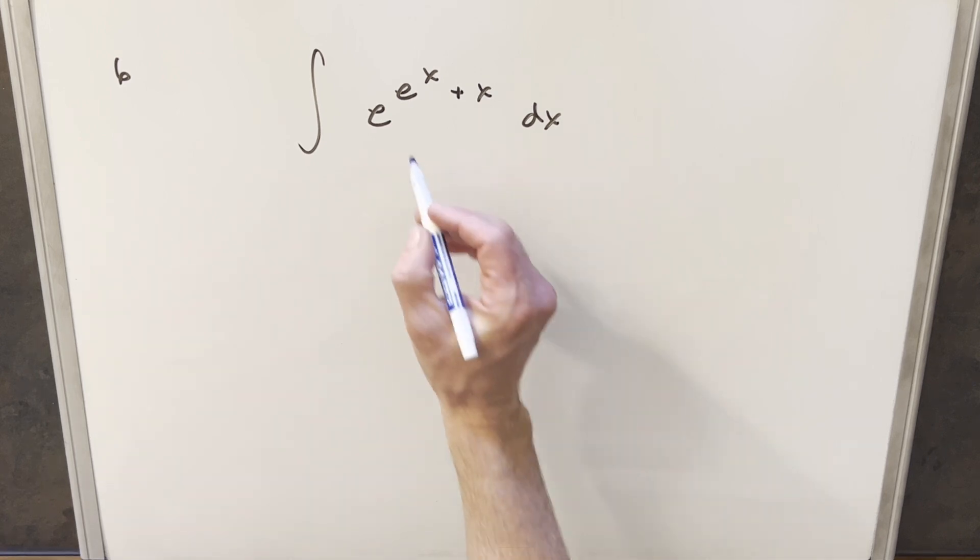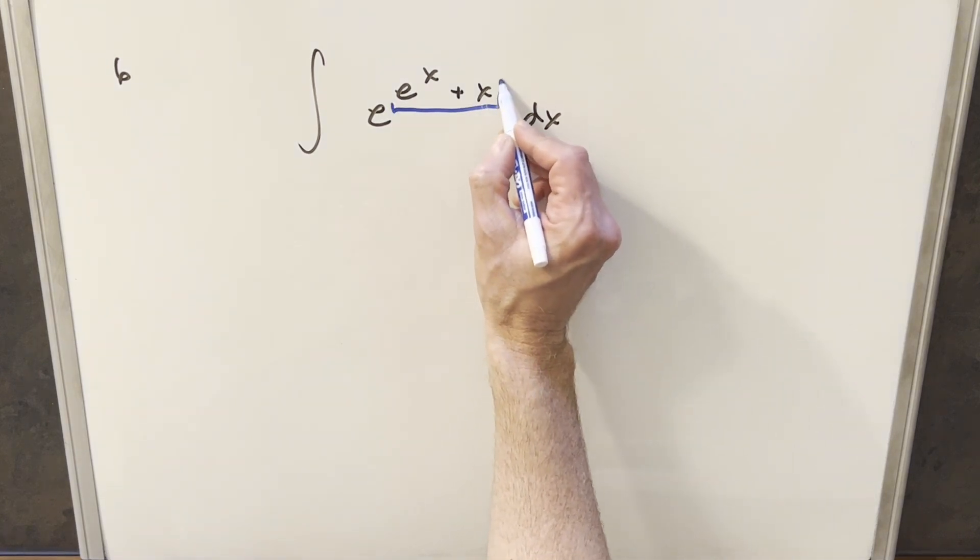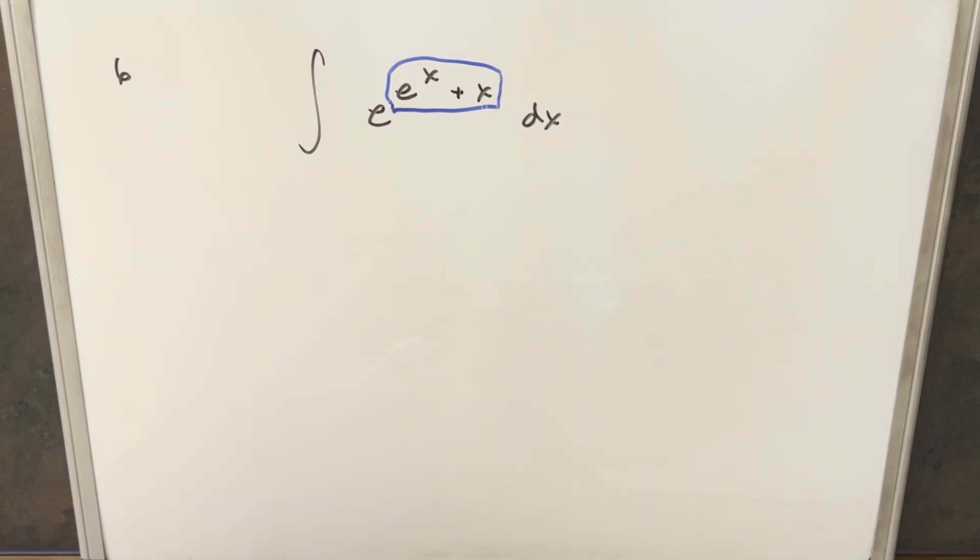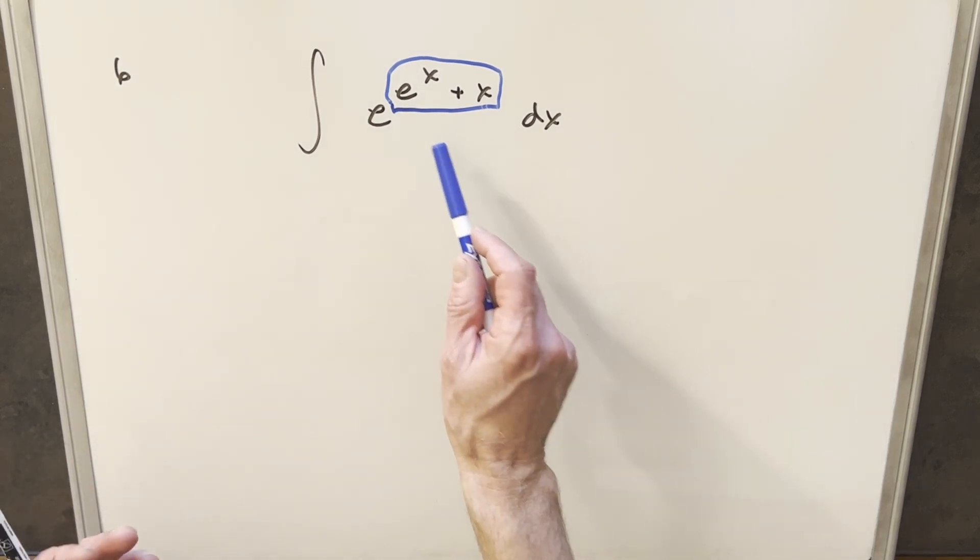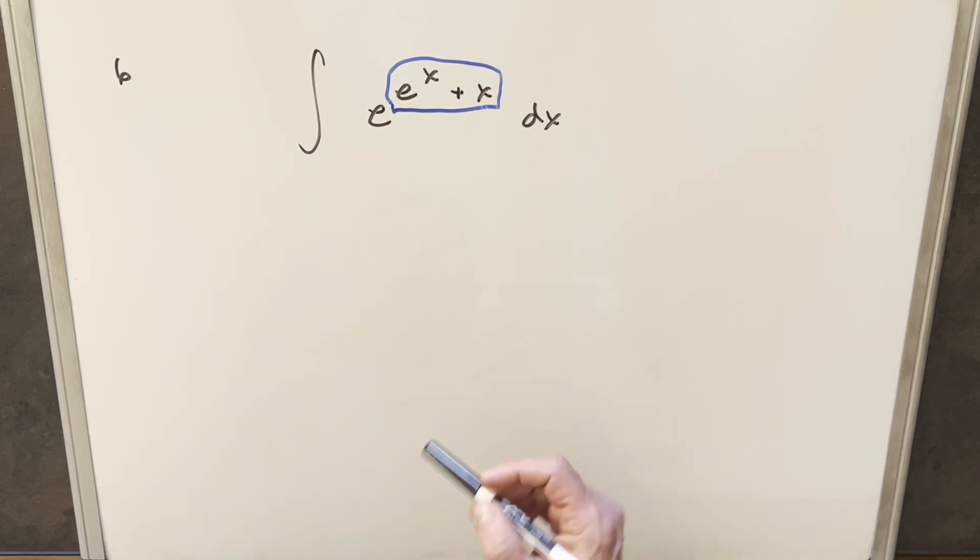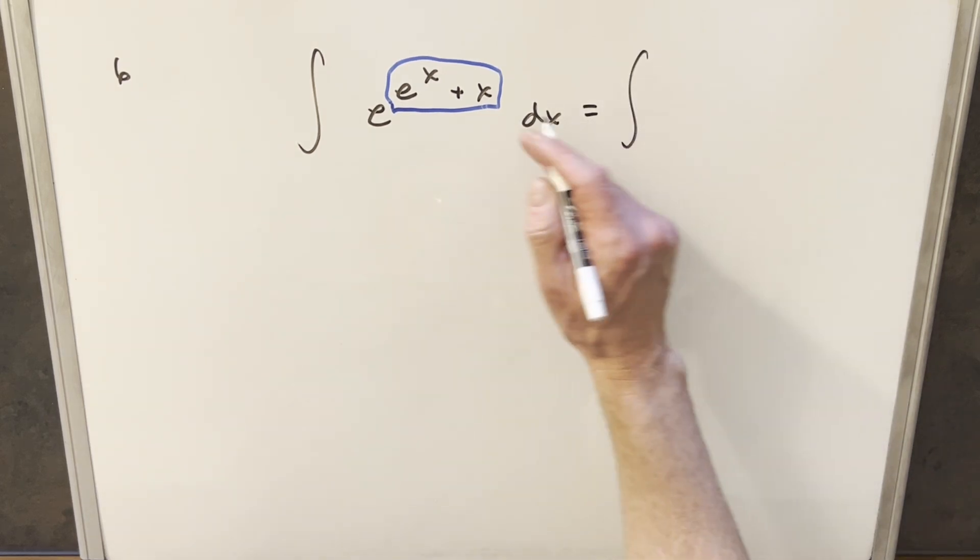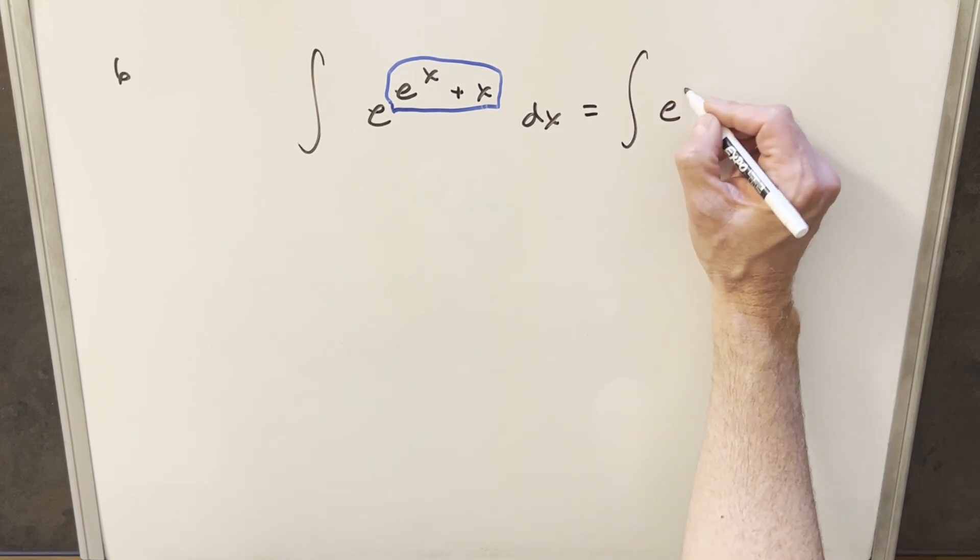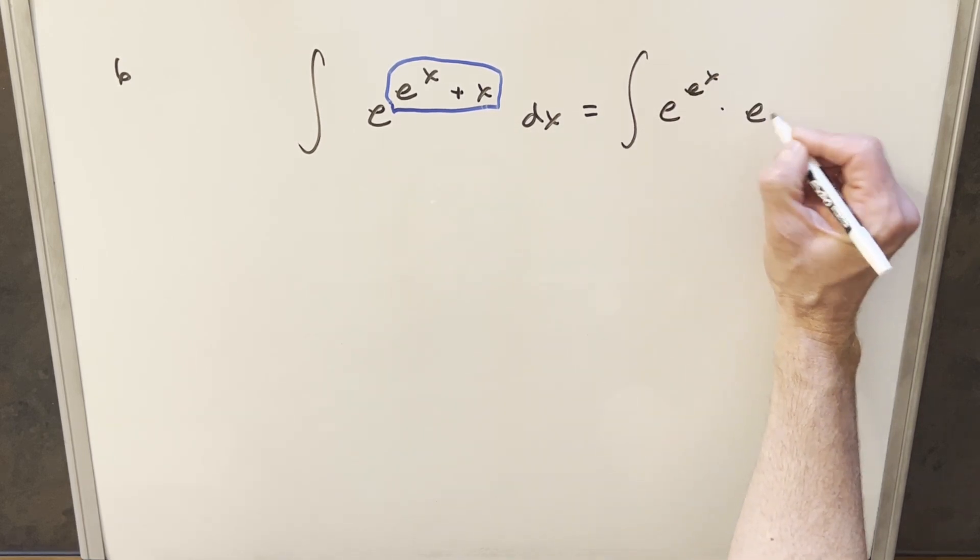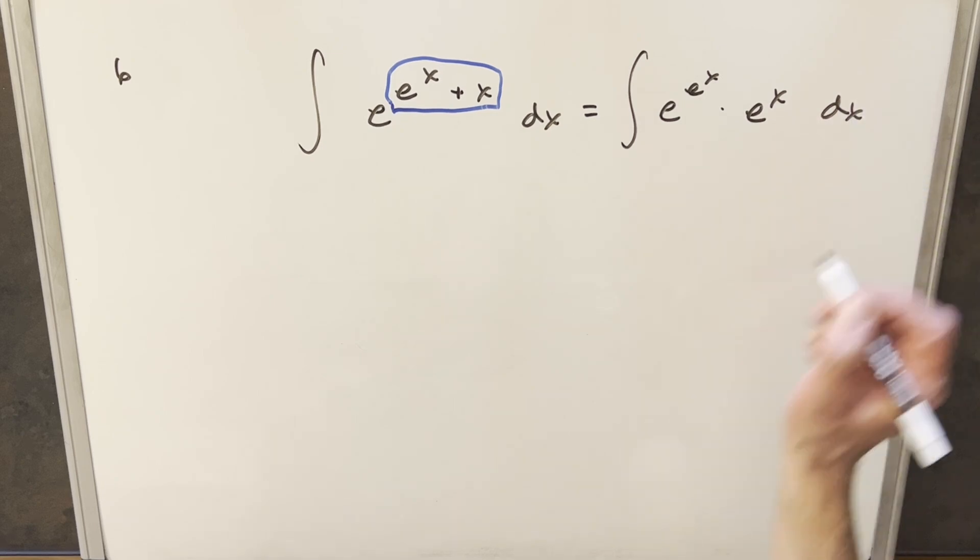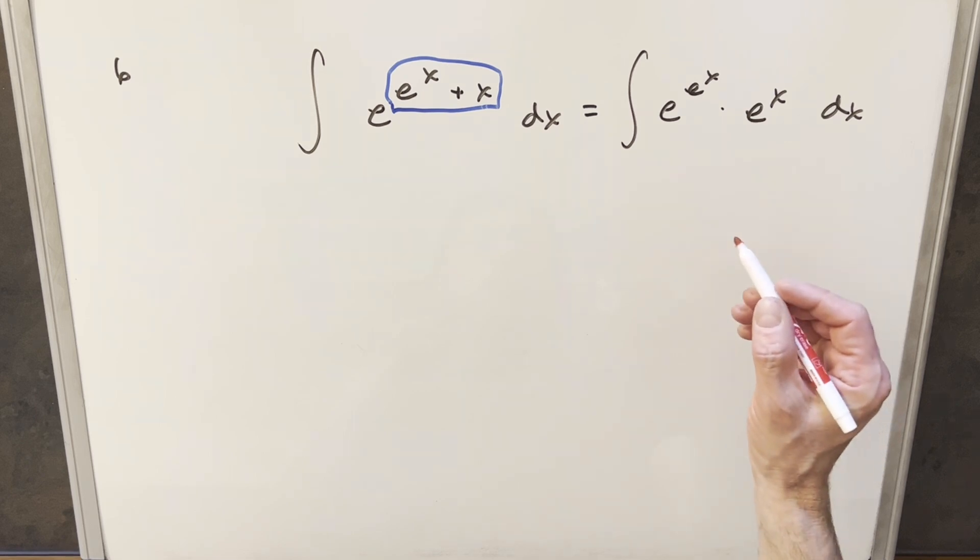The thing we need to deal with first is what's going on with this exponent here. It's a little confusing to look at, but what I can do, because there's a plus here, I can actually split this up. So rewriting this as two terms, we'll have e to the (e to the x) for the first one, and then we're multiplying it by e to the x dx. Doing it this way makes me think that a u substitution is going to work out okay.